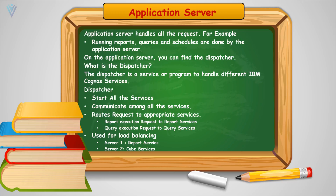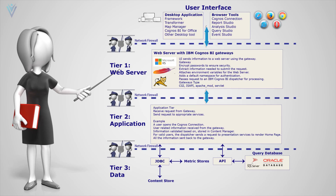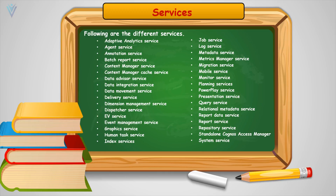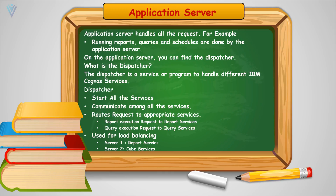Dispatcher is also used for load balancing. Let's assume our application server is divided into multiple servers. For example, on one server we have reporting services and on another server we have transformer or cube services. If we want to run a report, dispatcher routes the request to server one for report execution. For cube execution, dispatcher redirects the request to server two for cube processing.